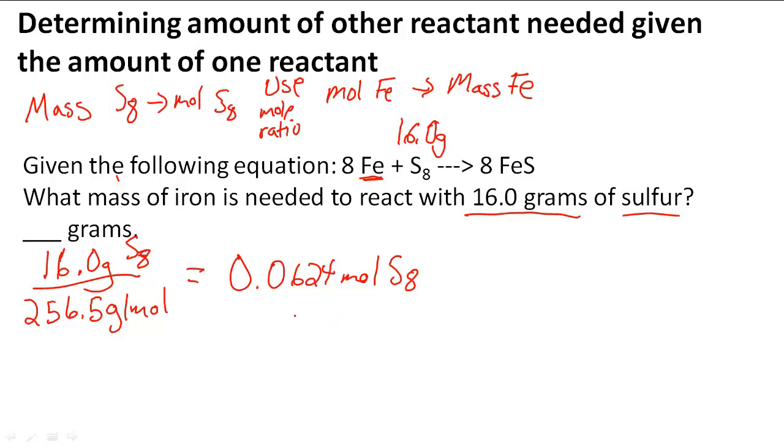And then we're going to use the mole ratio which we see is 8 to 1. So every time we have one of these we actually have 8 times the iron. I'm going to multiply this by 8 because it's an 8 to 1 ratio. So I multiply that number by 8 and what I get is 0.499 moles of Fe.